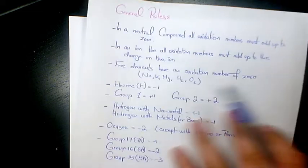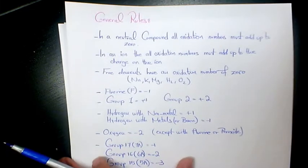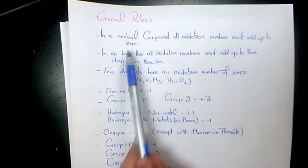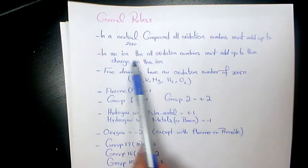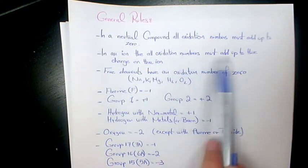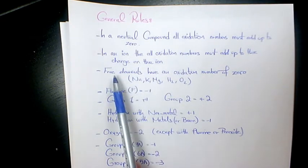Let's look at the general rules. In a neutral compound, all oxidation numbers must add up to zero. In an ion, all oxidation numbers must add up to the charge of the ion.